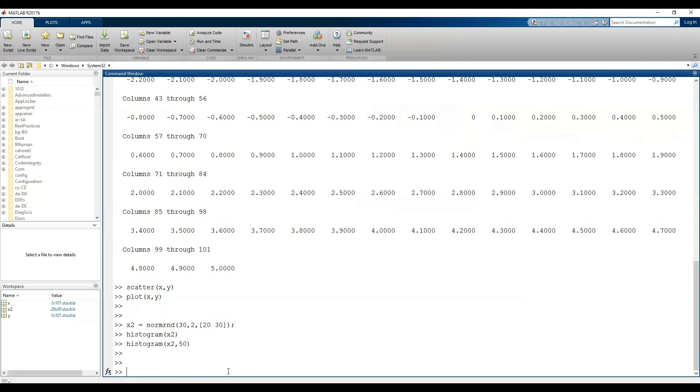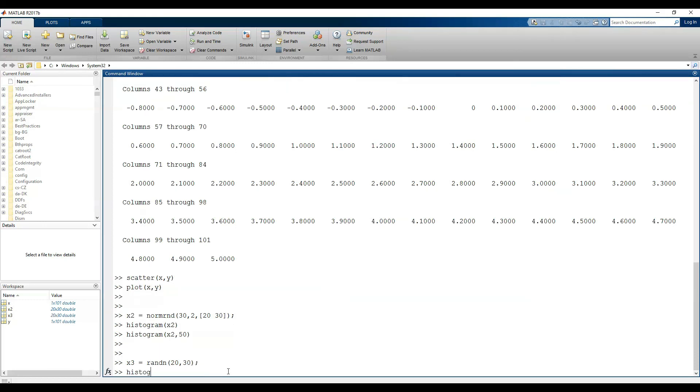Also, you can use randn to create an array of random numbers based on a standard normal distribution which has mu of 0 and sigma of 1.